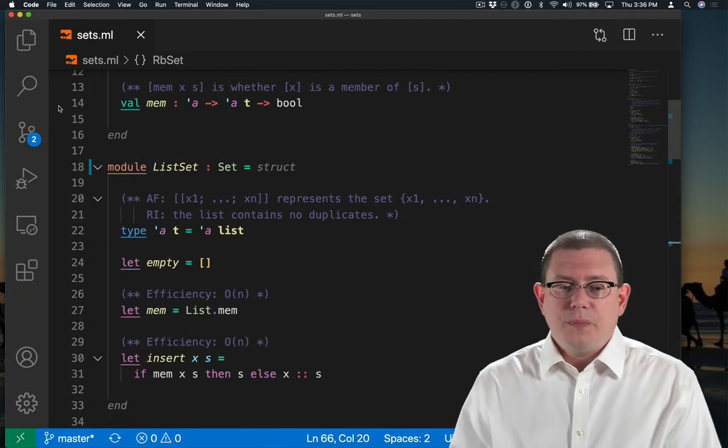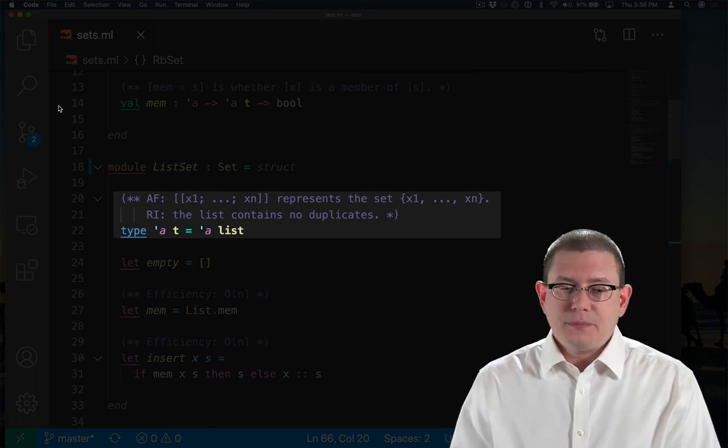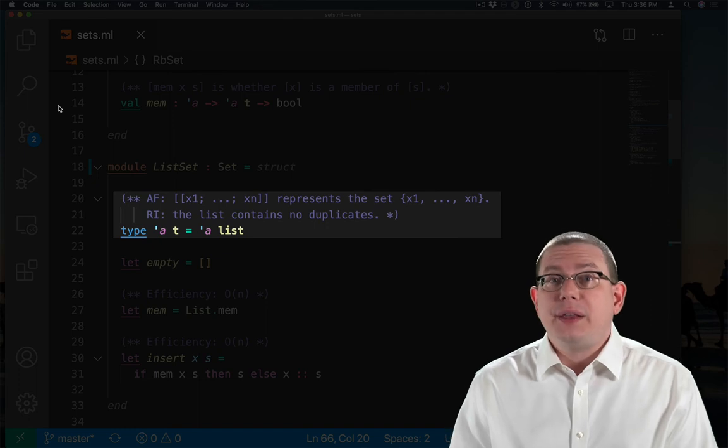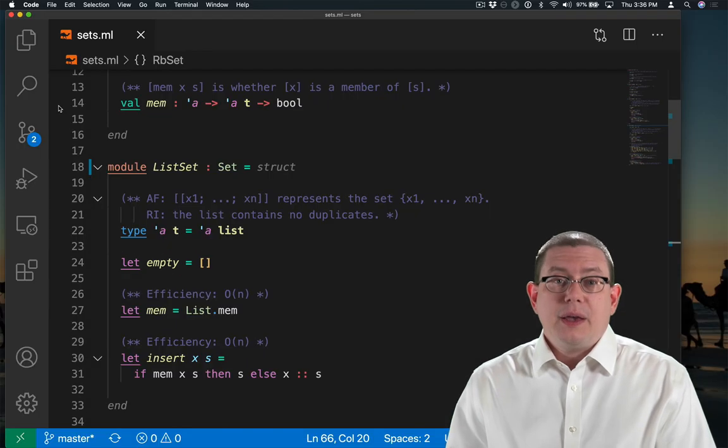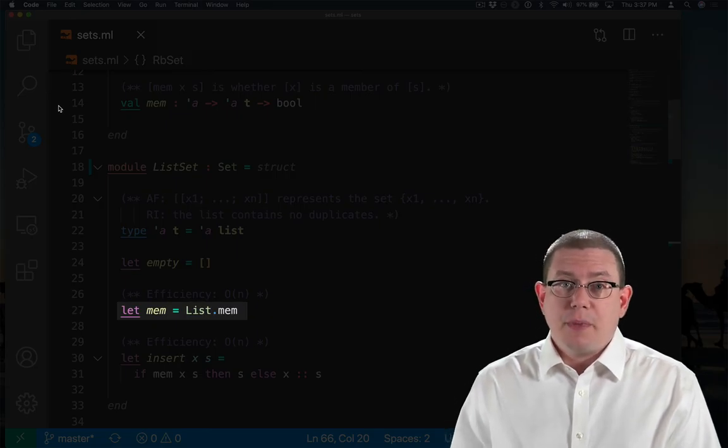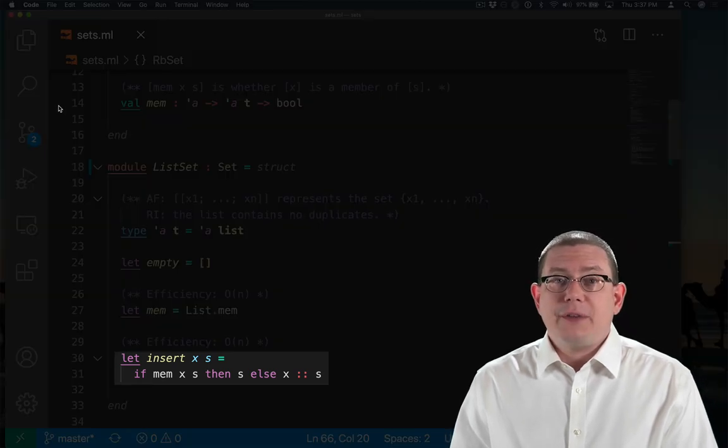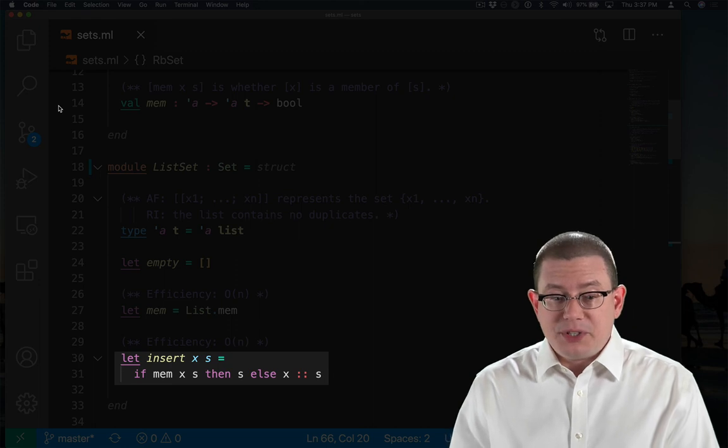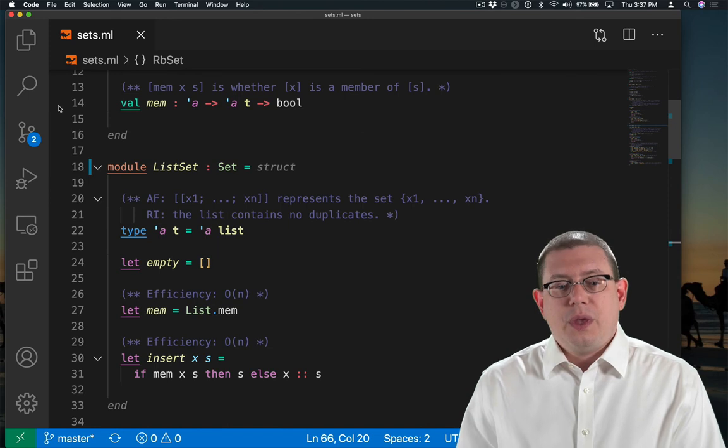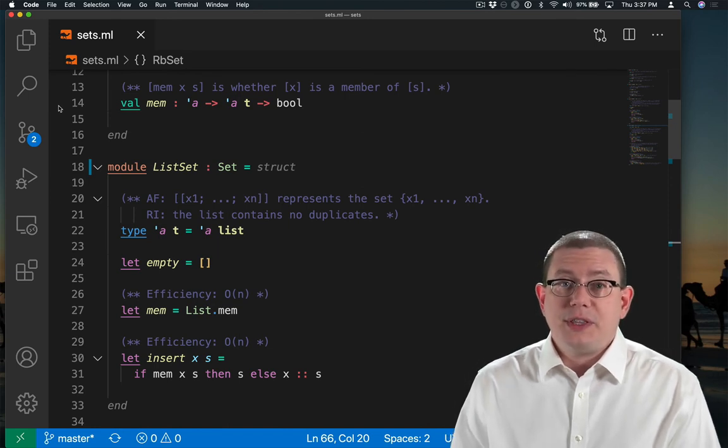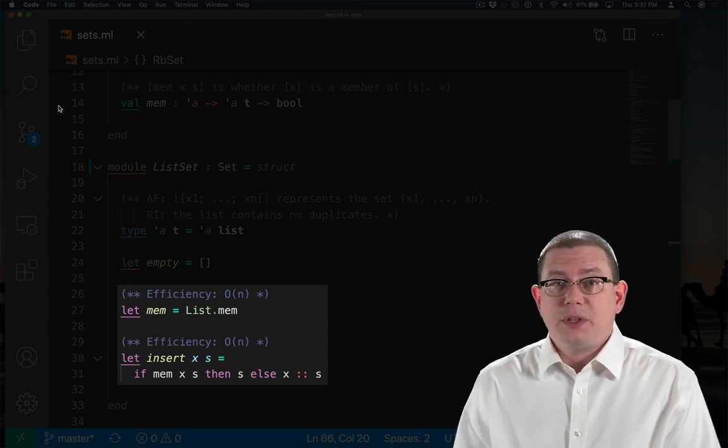List set is a module that represents sets as lists that contain no duplicates. So the list x1 through xn represents exactly the set x1 through xn. The empty list is the empty set. Membership, we can just implement in terms of the list module's mem function. And insert, the only wrinkle with that is we have to check and see whether the element is already a member of the set. If it is, we don't change it. Otherwise, we cons it onto the front. So both of these latter operations have an efficiency that is linear in the size of the set, because we have to look through all of the set elements that are currently members.